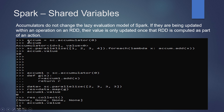Here we have created an accumulator variable using SparkContext.accumulator with the value 0. We can see the initial value is 0. Then we call the add function with the accumulator variable to add each value in the dataset to the accumulator. So when we check the value of the accumulator after execution, we find the value is 10.